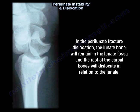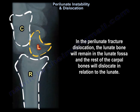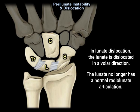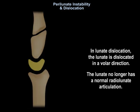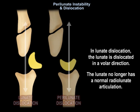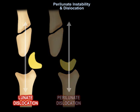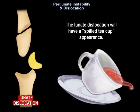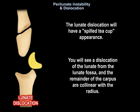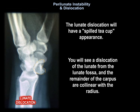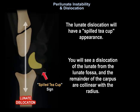In the perilunate fracture dislocation, the lunate bone will remain in the lunate fossa, and the rest of the carpal bones will dislocate in relation to the lunate. In lunate dislocation, the lunate is dislocated in a volar direction and no longer has a normal radiolunate articulation. The lunate dislocation will have a spilled teacup appearance, with dislocation of the lunate from the lunate fossa, while the remainder of the carpus remains collinear with the radius.